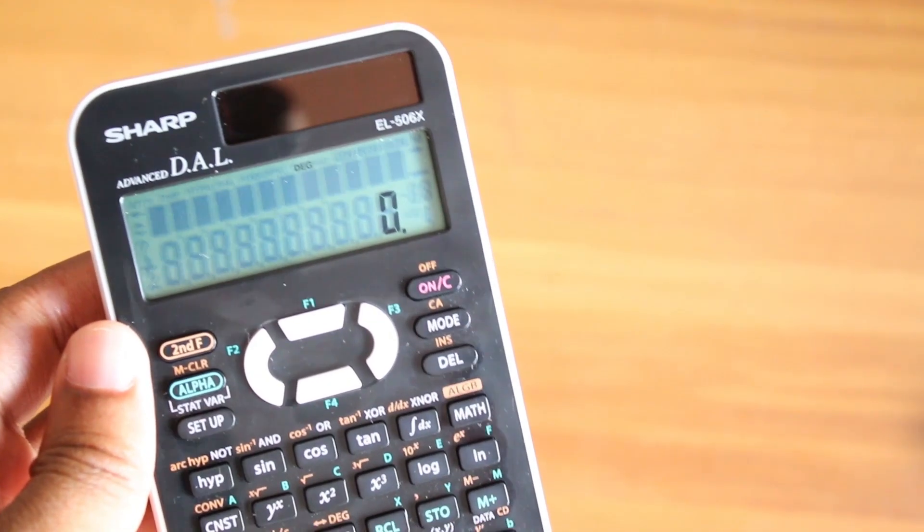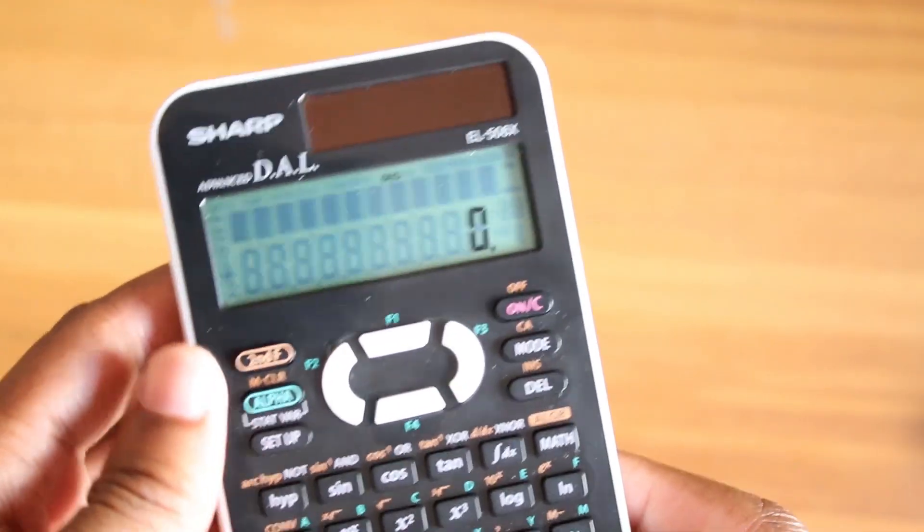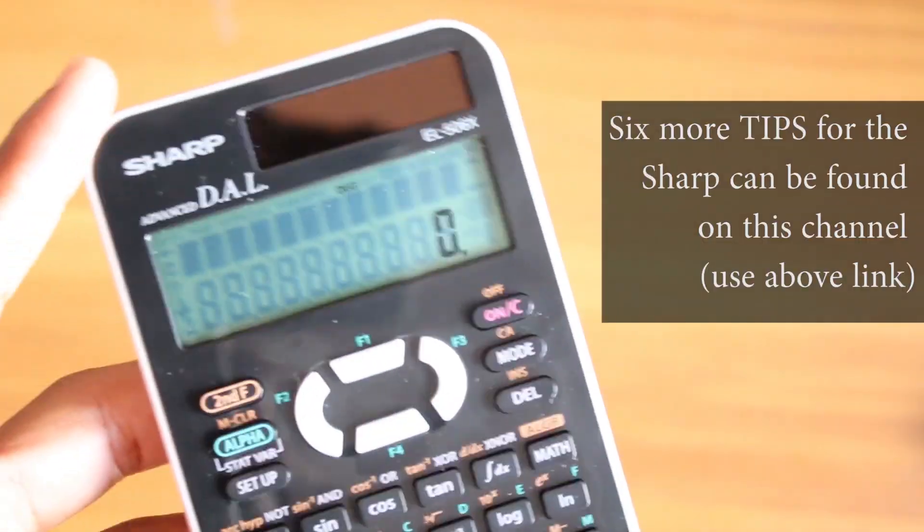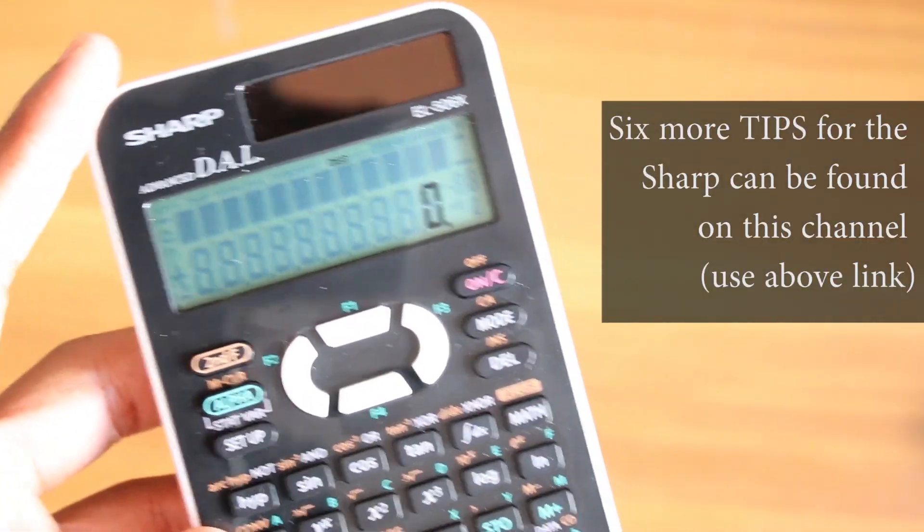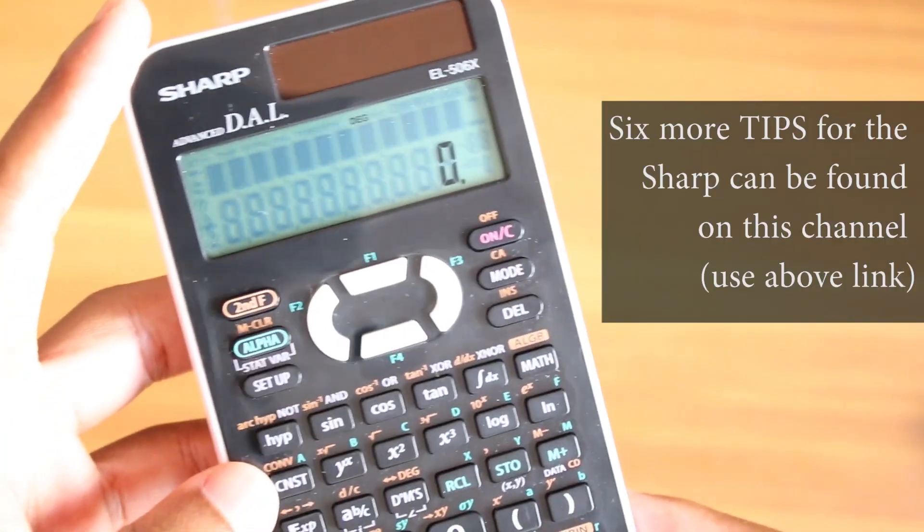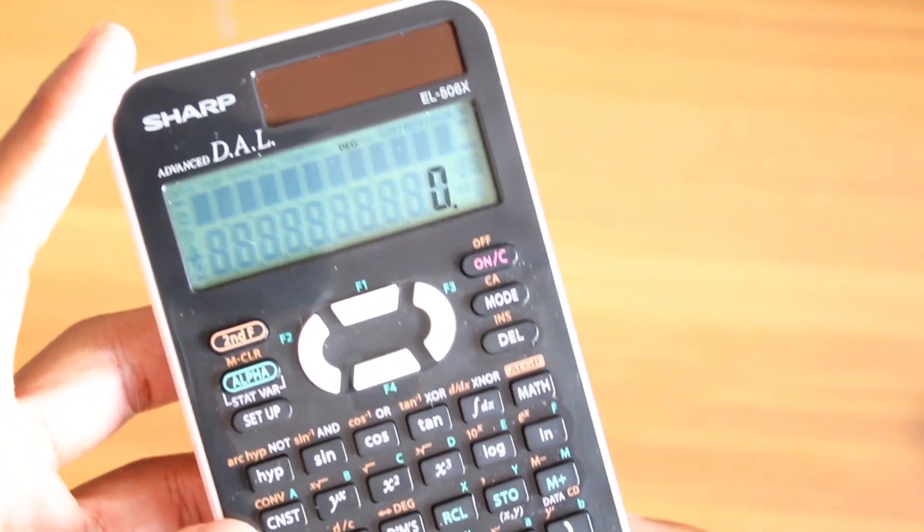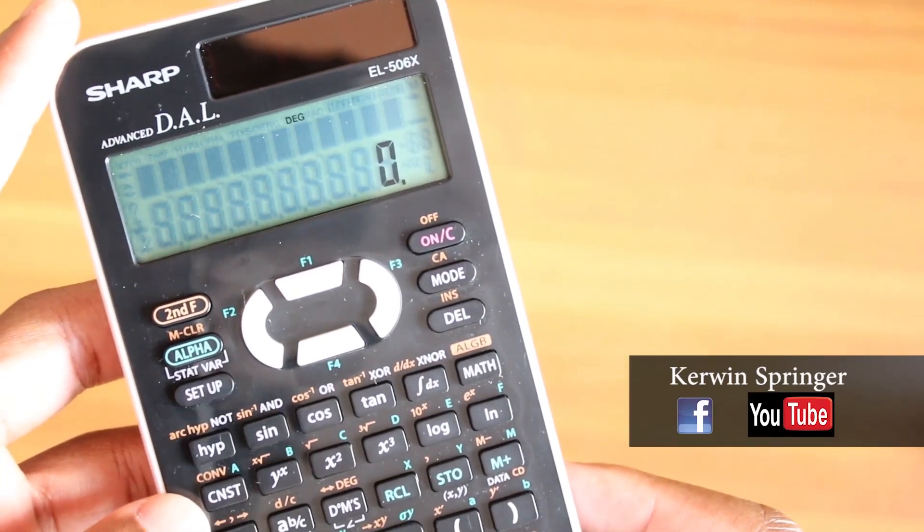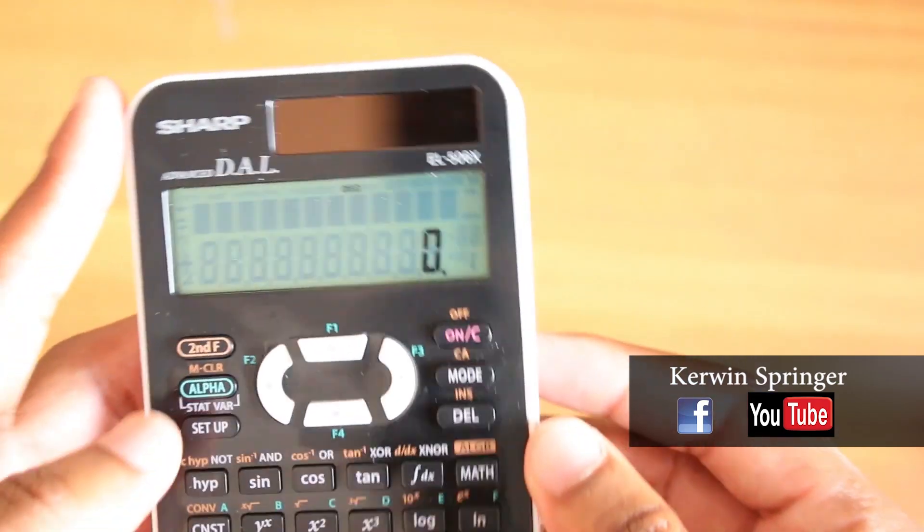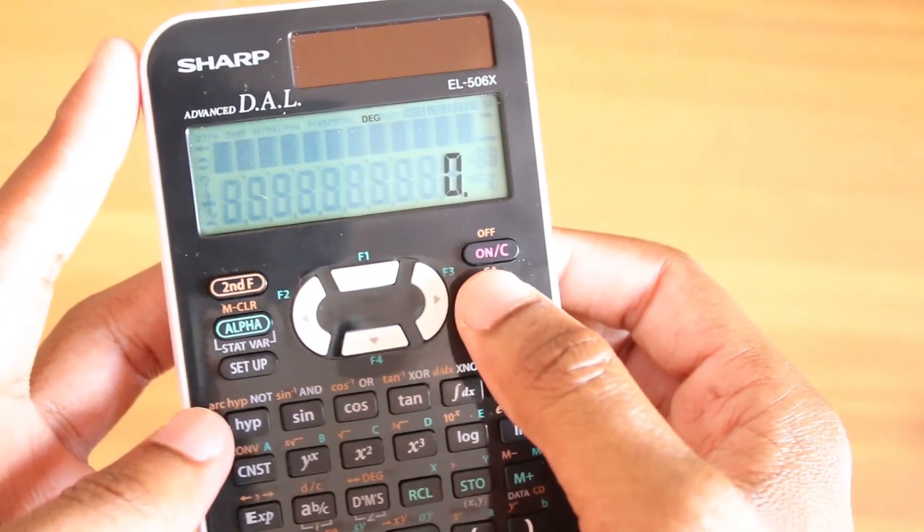The second tip is really useful but not well known. You can actually use your calculator to solve quadratic equations—yes, solve and factorize quadratic equations. You can use a calculator to help you do that. So how do you do this? You need to set your calculator into equation mode. So you press mode.